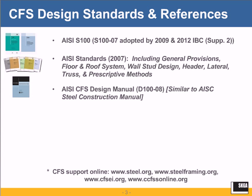The AISI Cold-Formed Steel Design Manual, known by the designation D100-08, is similar to the AISC Steel Construction Manual if you're familiar with that. It has a lot of beneficial design examples relating to member design and connection design. At the very back, it also has several test standards that have been developed by AISI.